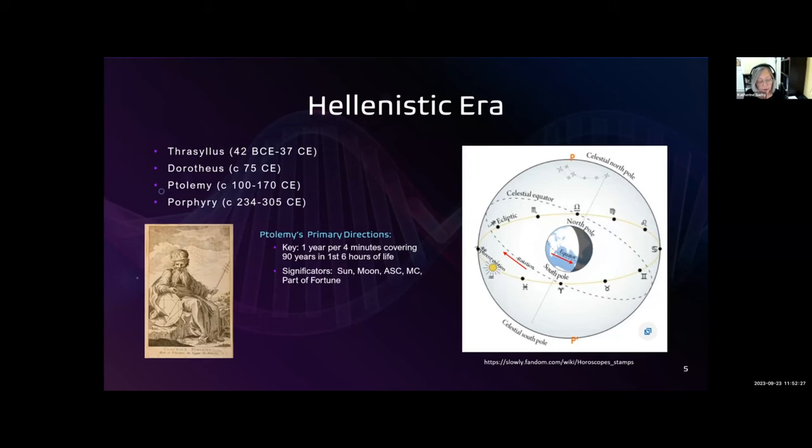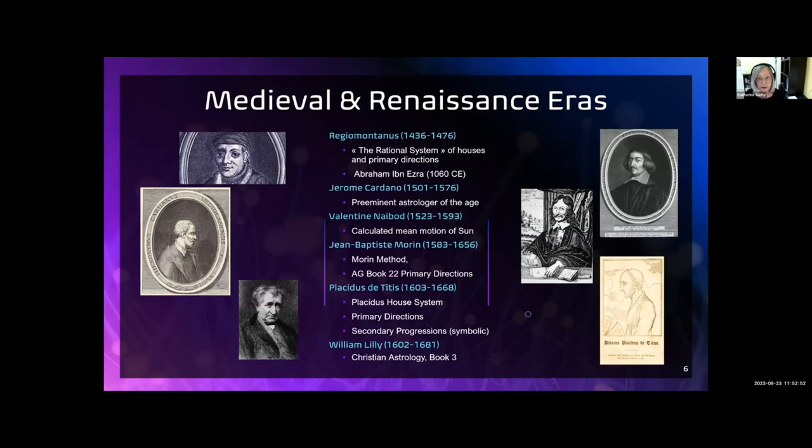In Ptolemy's time, the focus was on length of life, so the significators were restricted to the sun, moon, ascendant, midheaven, and part of fortune. All of those are considered connected to longevity. The traditional astrologers of the medieval and Renaissance eras added more significators and more promisors. They changed and improved upon the basic Ptolemaic method.